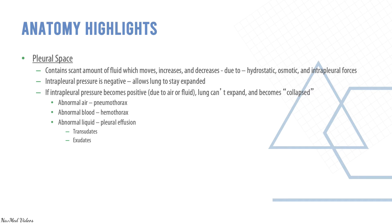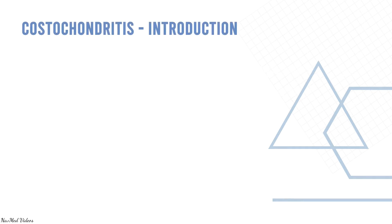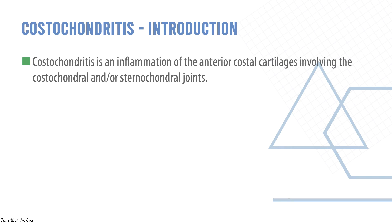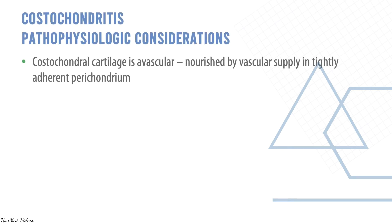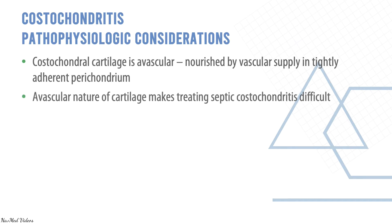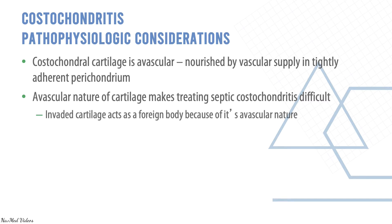Costochondritis is an inflammation of the anterior costal cartilages involving the costochondral or sternocostal joints. It can be septic or aseptic. Importantly, the costochondral cartilage is avascular — it is nourished by the vascular supply in a tightly adherent perichondrium. This avascular nature makes treating septic costochondritis difficult, as invaded cartilage acts as a foreign body; antibiotics cannot reach it.